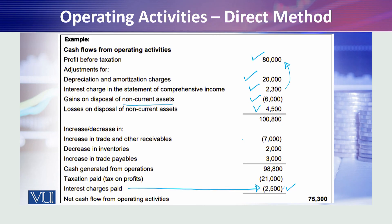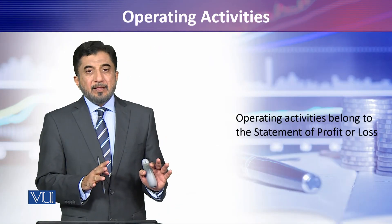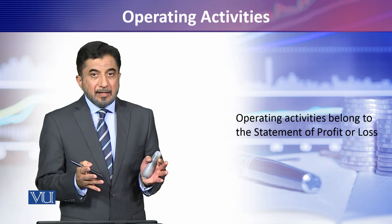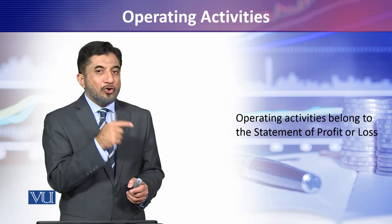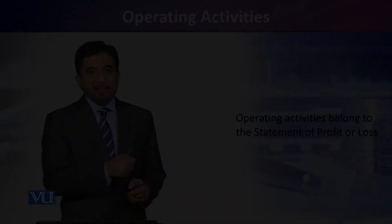Then we adjust for increases or decreases in inventory, trade receivables, trade payables, and any accruals. After showing these working capital changes, we work out the income tax cash paid and the financial charges cash paid, and subtract them to calculate the cash flow from operating activity. This is all about the cash inflows and outflows that affect the statement of profit or loss.